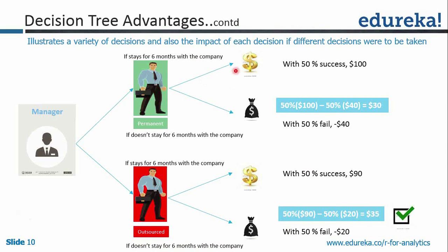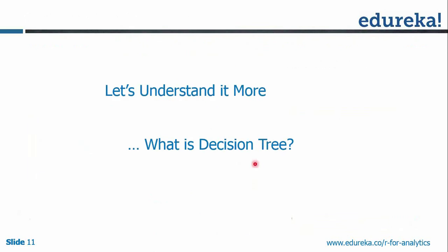With each decision, you might either succeed or fail. The values associated with success and failure are listed. You multiply probability by impact for success, probability by impact for failure, subtract these two to get the expected monetary value. Decision tree not just classifies but also provides details on what is the success and impact associated with each decision. Decision tree is a supervised, rule-based classification. The top-most node is called the root node.